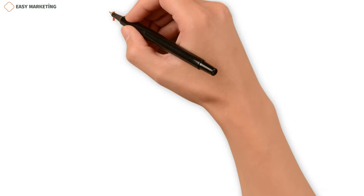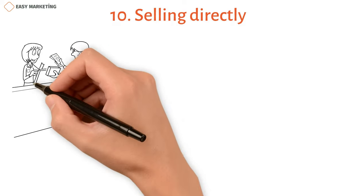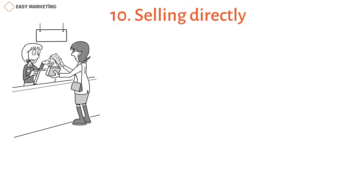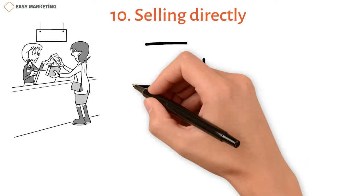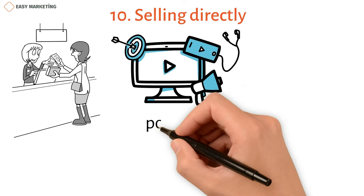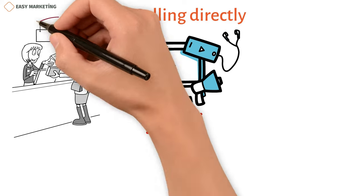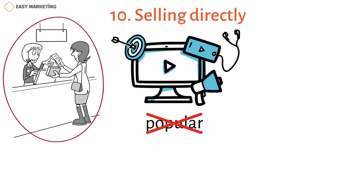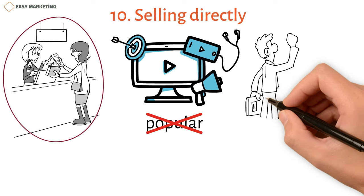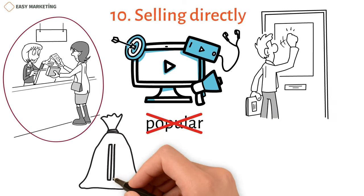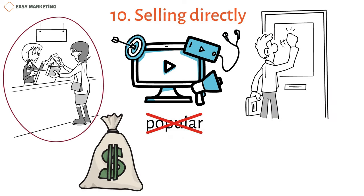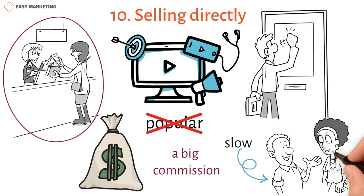Number ten: personal selling. Personal selling is one of the oldest ways to get the word out about a product. Before radio, TV, and online platforms were popular, businesses relied on personal selling to spread the word. Companies use this type of marketing communication to sell things to consumers by going door to door. This method is very expensive because you have to give your salespeople a big commission on every unit they sell, and it is also slow because it only talks to one potential buyer at a time.